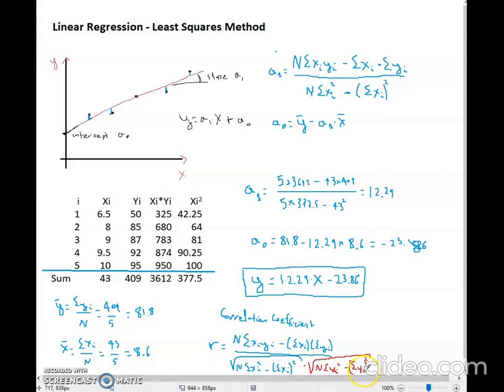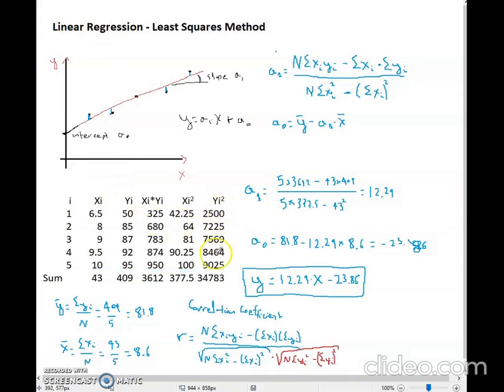So this means that we need one more column to our data, which is going to be the yi squared, which is just every value from here squared. So here we have 50 squared, which equals 2,500, 85 squared equals 7,225, and after finding all the values in this table and their summation on the last row, we can calculate the correlation coefficient r.